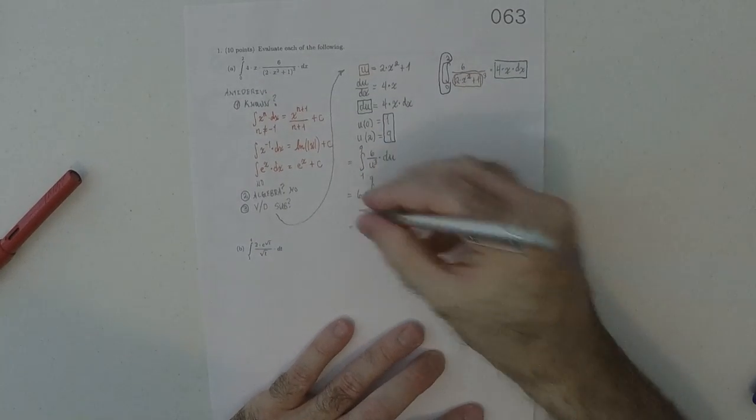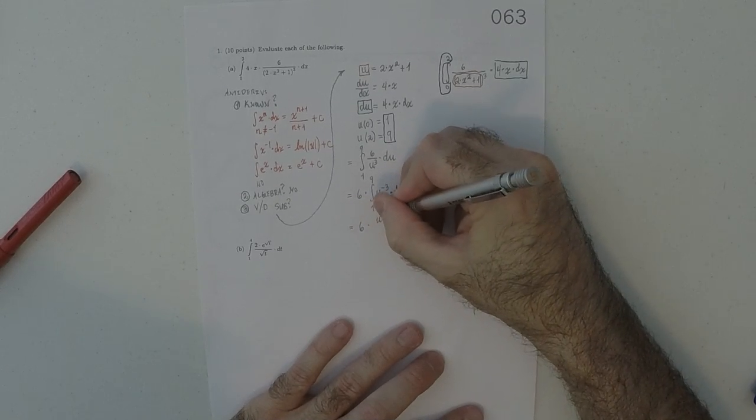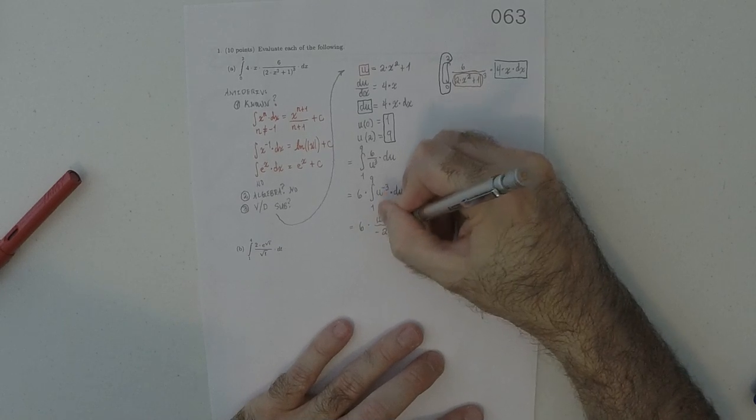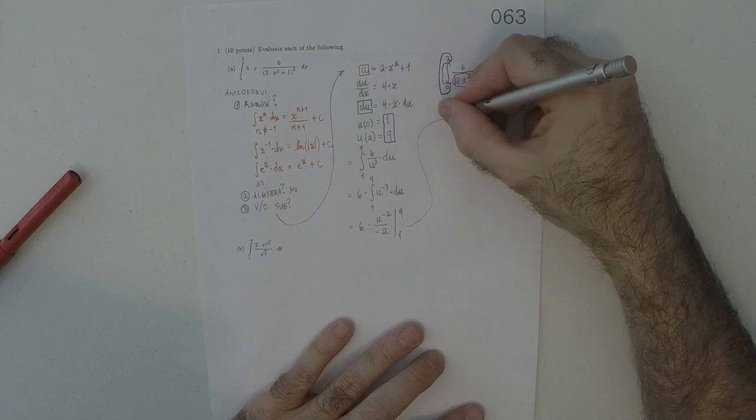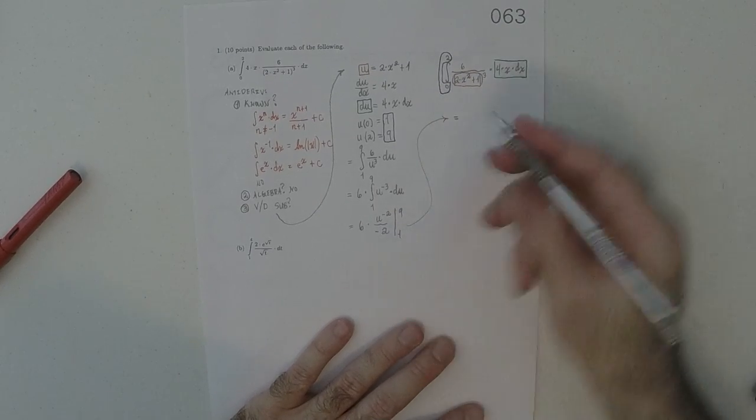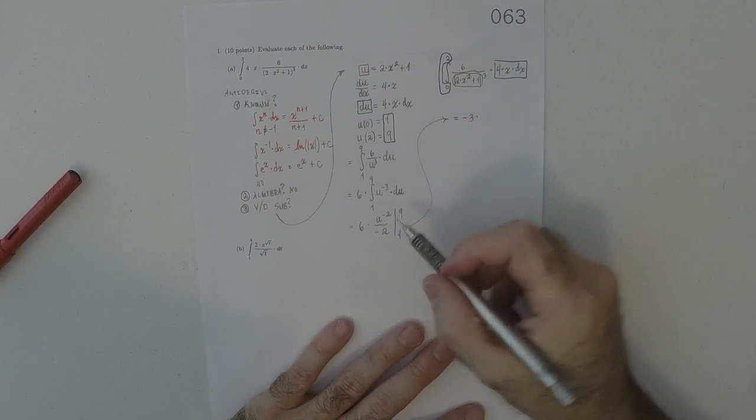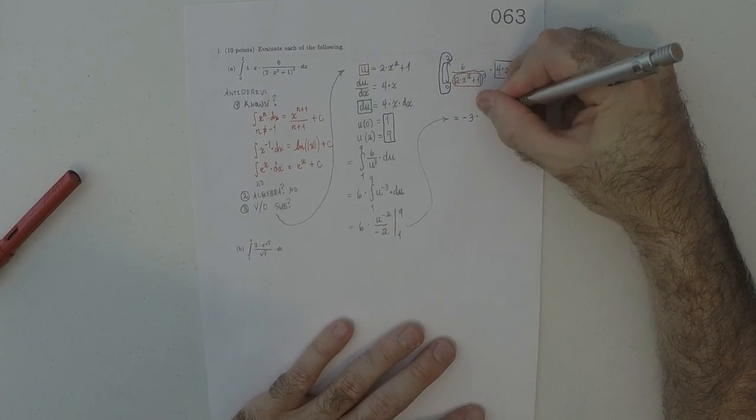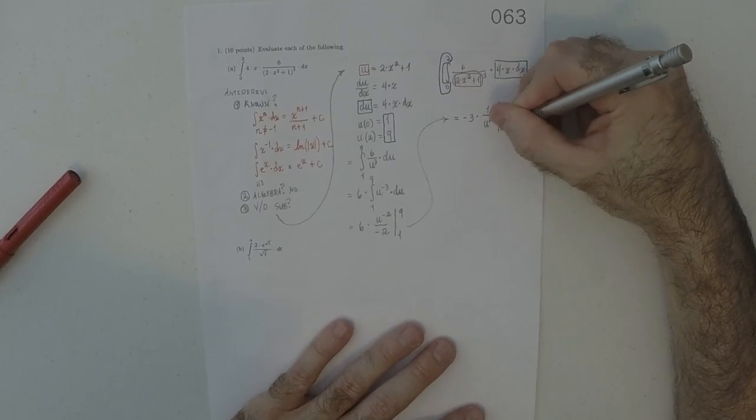So, the answer is 6 multiplied by u to negative 2 divided by negative 2, evaluated from 1 to 9. So, I'll do 6 over negative 2 is negative 3. And then, I'm going to write u to negative 2 is 1 over u squared. Evaluated from 1 to 9.